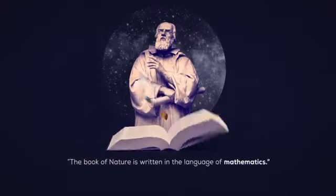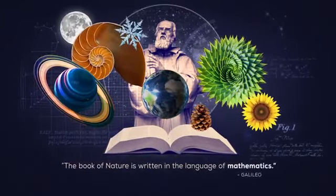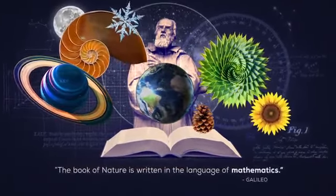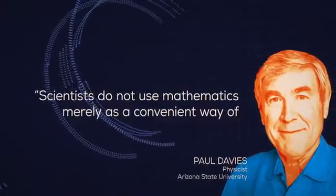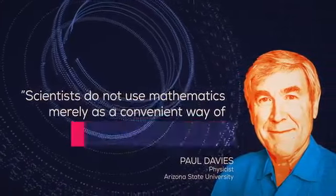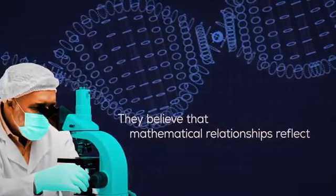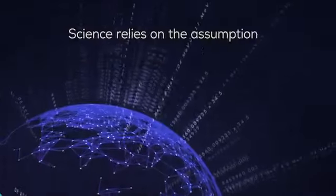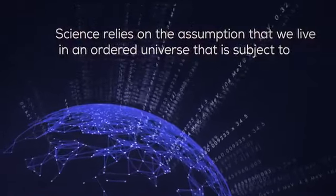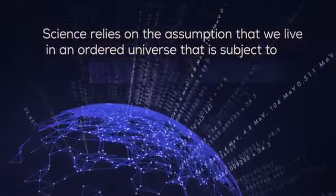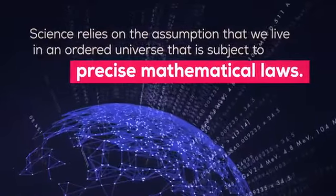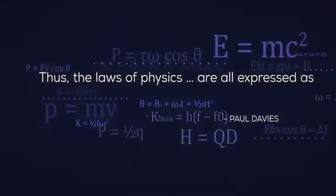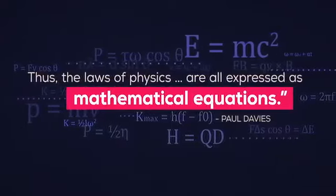As Galileo put it, the book of nature is written in the language of mathematics. Scientists do not use mathematics merely as a convenient way of organizing the data. They believe that mathematical relationships reflect real aspects of the physical world. Science relies on the assumption that we live in an ordered universe that is subject to precise mathematical laws. Thus, the laws of physics are all expressed as mathematical equations.